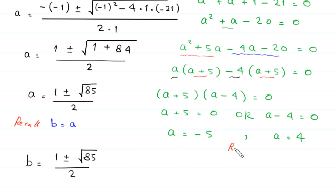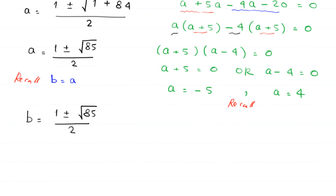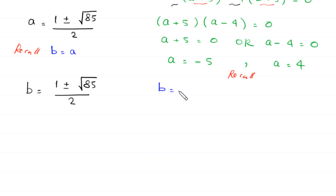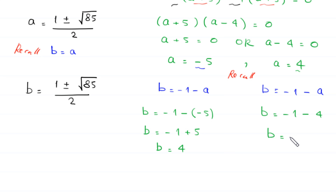To find the values of b we recall that b equals negative 1 minus a. When a is negative 5, b equals negative 1 minus (negative 5) equals negative 1 plus 5, so b equals positive 4. When a is 4, b equals negative 1 minus 4, so b equals negative 5.